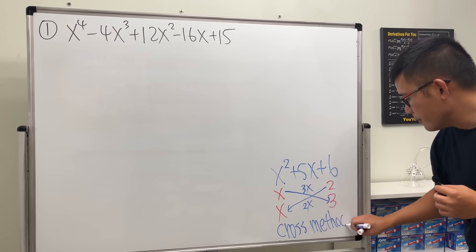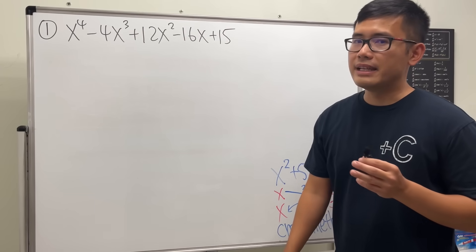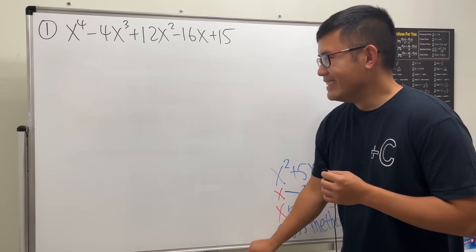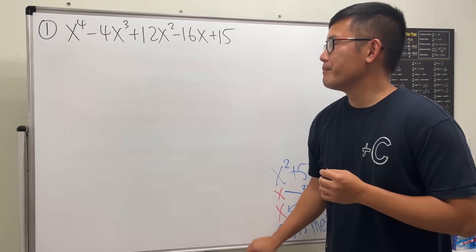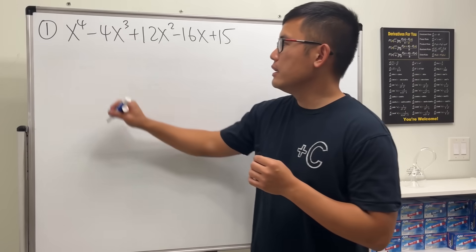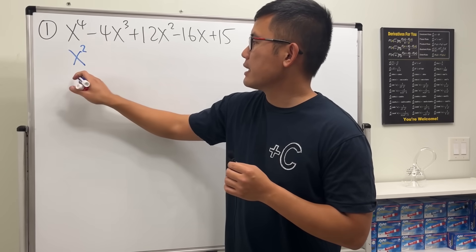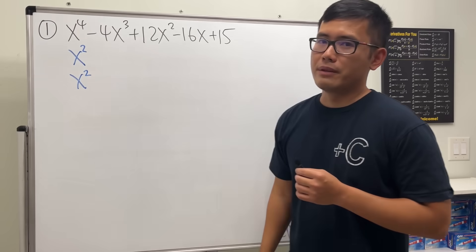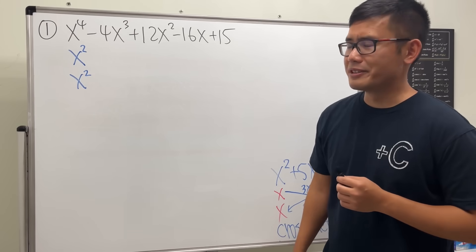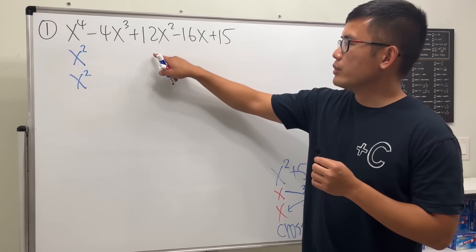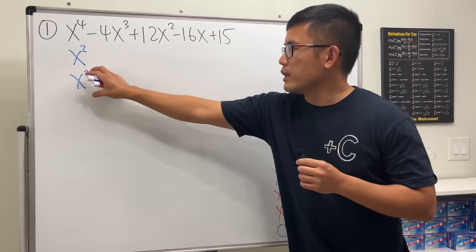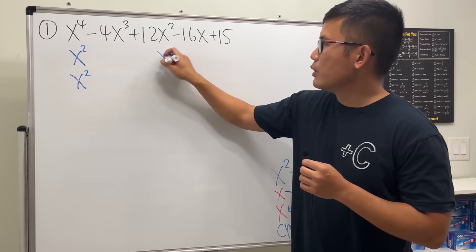Now the question is: can we do something similar for the degree-4 expression? The answer is yes. First, for x to the fourth power, the only way to factor it is x squared times x squared. Now I'd like to address the middle term — this is going to factor in quadratic form, so this part is going to involve x.